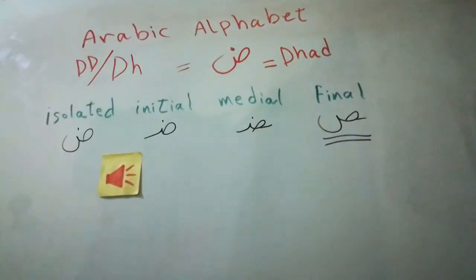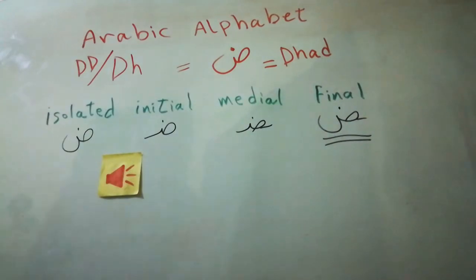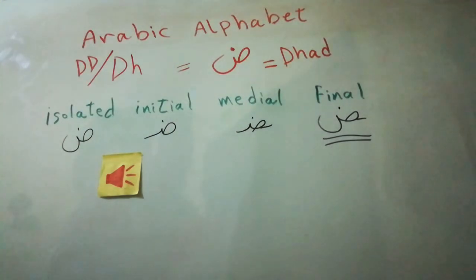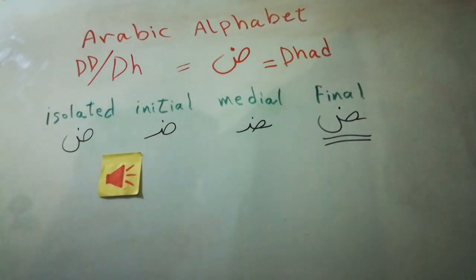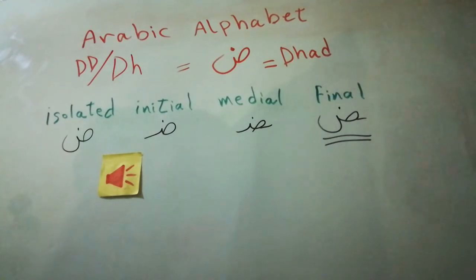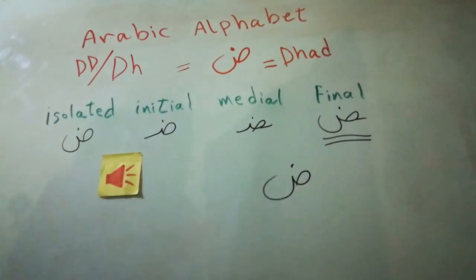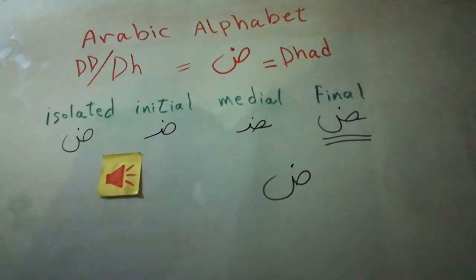Now, I made a mistake — do you remember guys what this is? Exactly, this is SOD (ص). And if I would just place a dot on the top of it, it's going to be DOD. This is the beauty of this language — the shapes are quite the same, with just a little difference in the dot location, yet they have a totally different sound. So the previous lesson was about SOD, and now if we put the dot on top it becomes DOD.